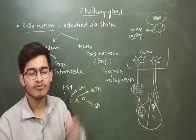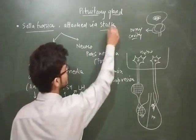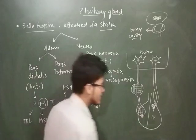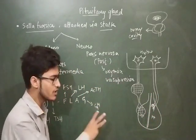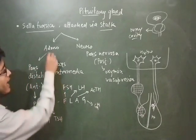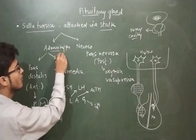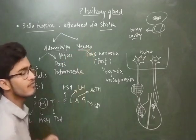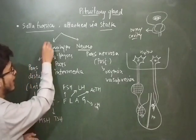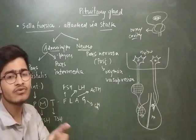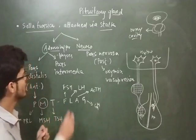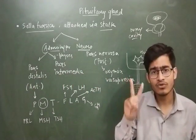Now talking about structure: the pituitary is divided into two main parts — adenohypophysis and neurohypophysis. Adenohypophysis starts with 'adeno,' which links it to the anterior pituitary. The adenohypophysis is further divided into two regions: pars distalis and pars intermedia.